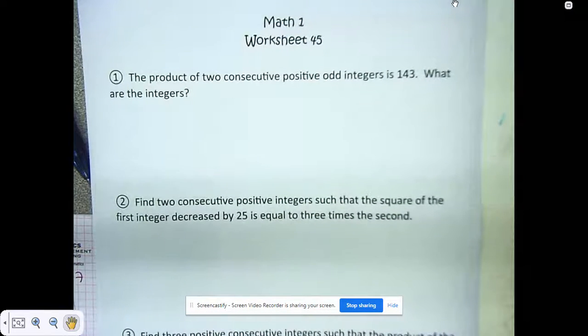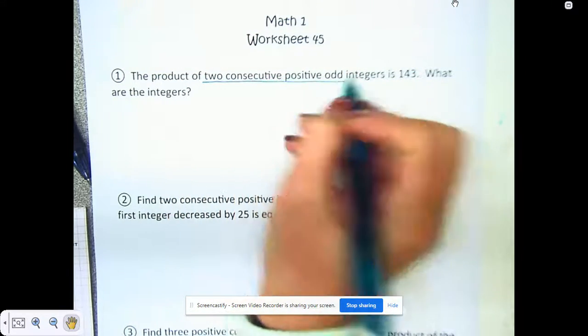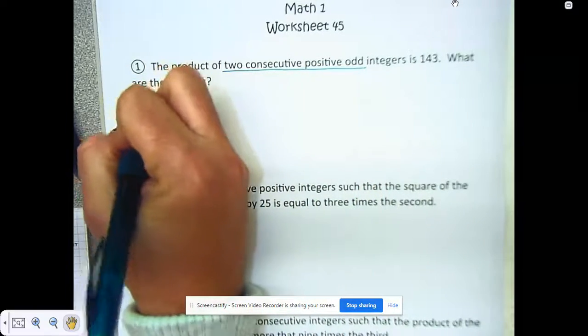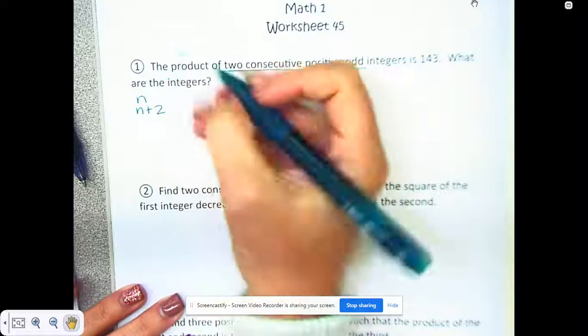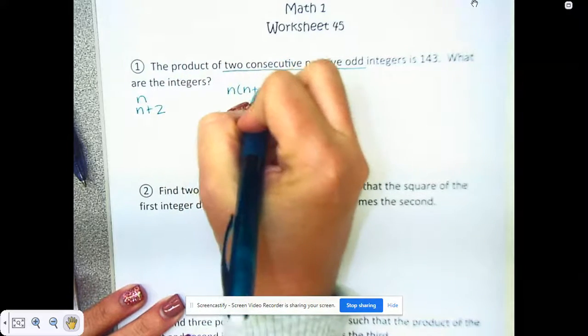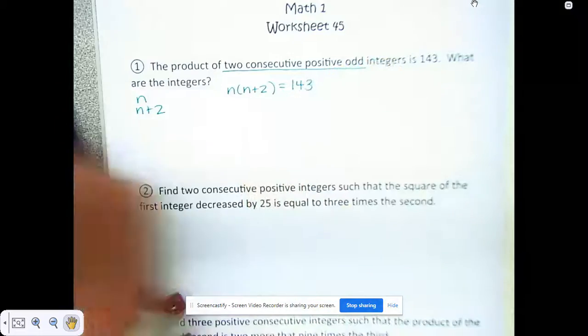The product of two consecutive positive odd integers. Your first step is that we've got two consecutive positive odds, so if we think back that's going to be n and n plus 2. Those are our symbols, so the product means we're going to multiply those and that equals 143.